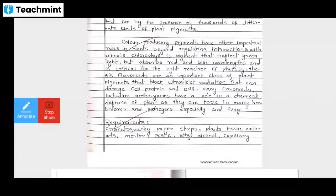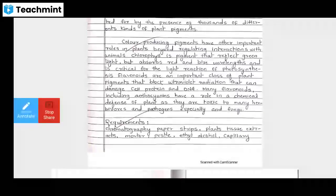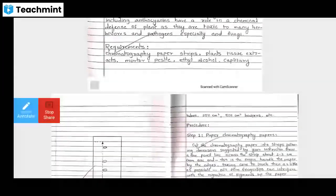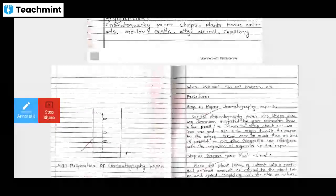Chlorophyll is the pigment that reflects light and is critical for reactions of photosynthesis. Flavonoids are an important class of plant pigments that block ultraviolet radiation that can damage cell DNA. Many flavonoids, including anthocyanins, have a role in chemical defenses of plants as they are toxic to many herbivores and pathogens, especially fungi. Requirements: chromatography paper strips, plant tissue extract, mortar and pestle, ethyl alcohol.